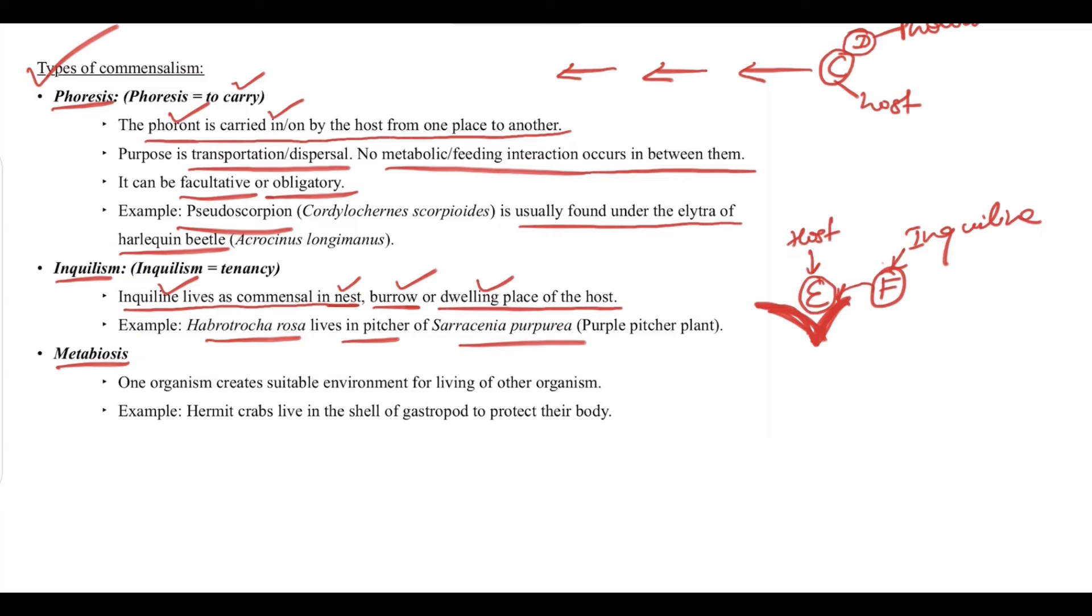Next we have metabiosis. One organism creates suitable environment for living of other organism. For example, hermit crab lives in the shell of gastropod to protect their body.